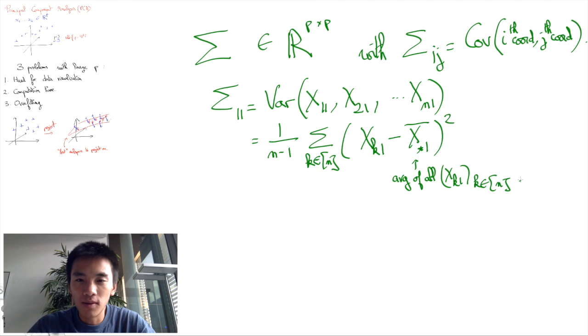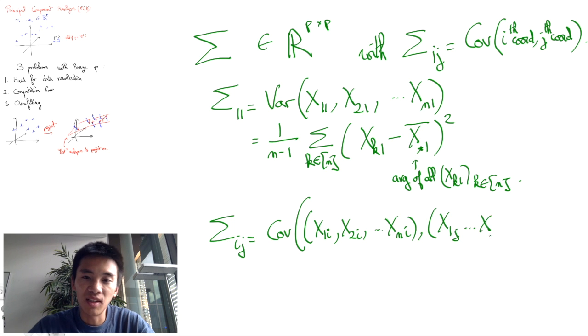Similarly, or perhaps more generally, sigma_ij is going to be the covariance between the data x1,i until xn,i and x1,j until xn,j, so between two coordinates i and j.